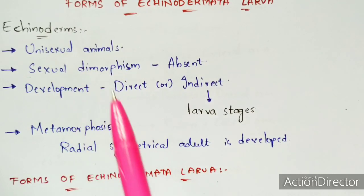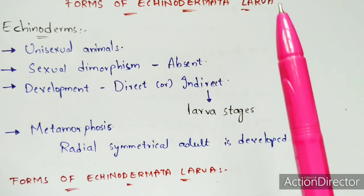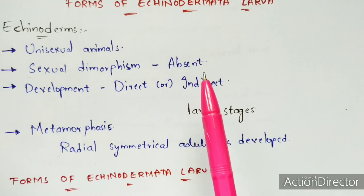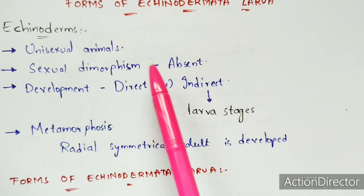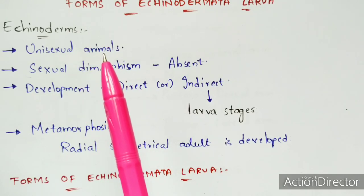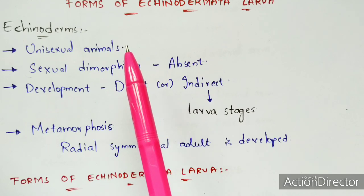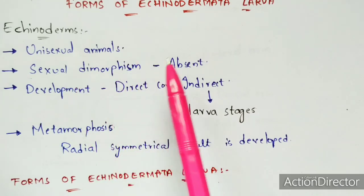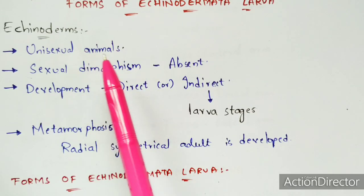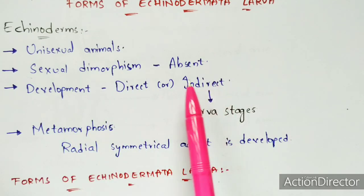Sexual dimorphism is absent in Echinoderms. Sexual dimorphism is a phenomenon where, within a species such as humans, the sexes are separate — male and female — with different sex organs exhibiting different characteristics. In Echinoderms, sexual dimorphism is absent because they are unisexual animals, present either in male or female form only.